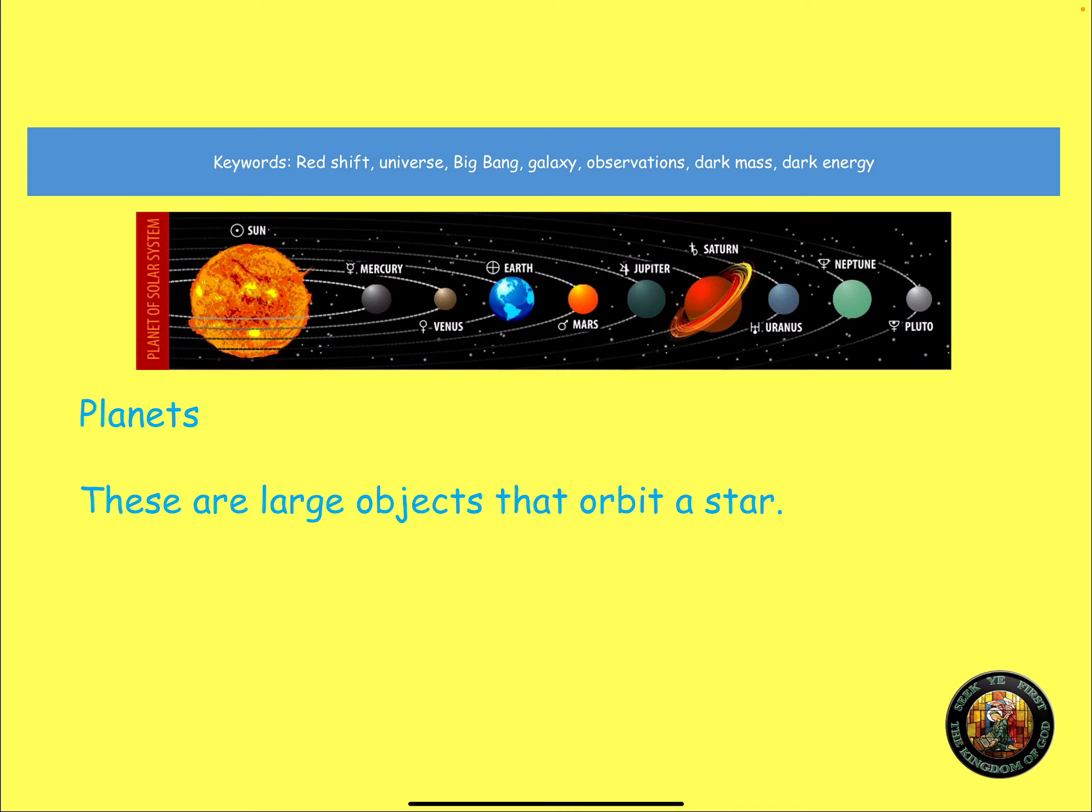Moving on. So, you can see that's what our solar system is. You can see the sun in the middle, and you can see the planets orbiting the sun. We do not class, I mean, Pluto is an odd one. It explains on the next slide.